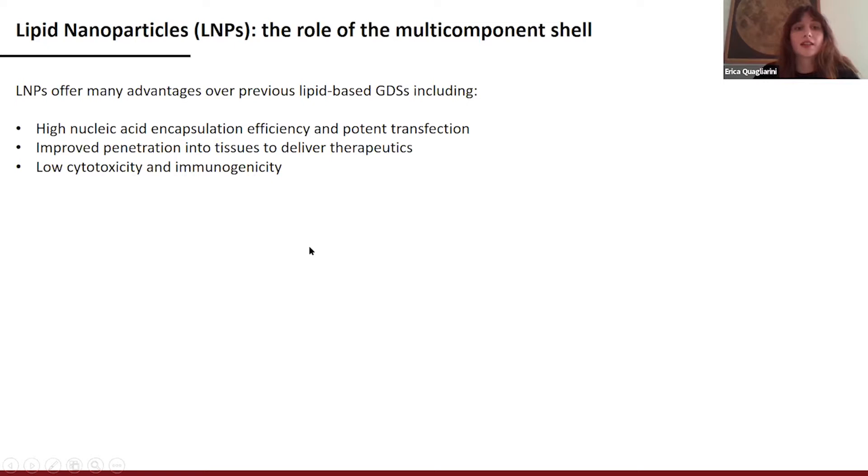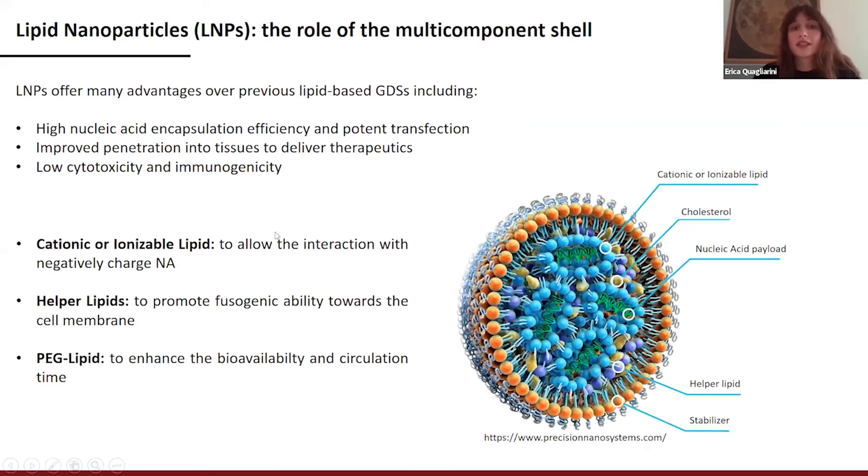So why are these systems so promising and efficient? Firstly, they have evolved away from the conventional lipid-based gene delivery systems in terms of higher encapsulation efficiency of the nucleic acids, improved penetration into the tissues, and lower cytotoxicity and immunogenicity. This was principally due to their characteristic multi-component lipid shell that consisted in a cationic or ionizable lipid to permit the interaction with the negatively charged nucleic acids. Some helper lipids to promote the fusogenic ability towards the cell membrane, and also particularly to enhance the bioavailability of the systems.